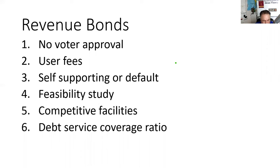When we issue revenue bonds, we go on a feasibility study. I've never met a feasibility consultant who tells the issuer what they're considering is not feasible. In the Bay Area, they spent $30 million on a feasibility study about hosting the Olympics. After $30 million, did he say it's feasible? Yes. The top consultant on defaulted bonds said, 'I didn't say it would work, I just said it's feasible.'